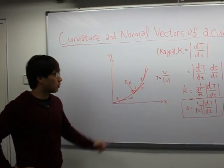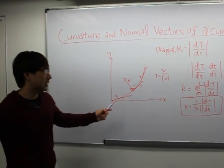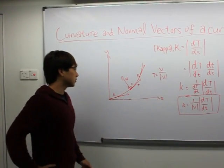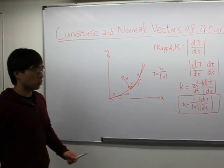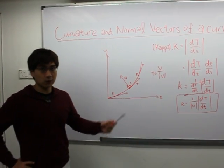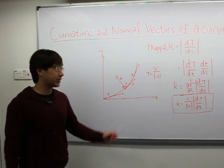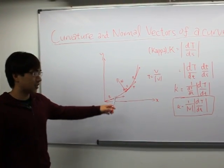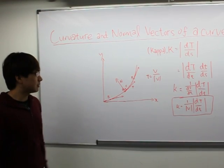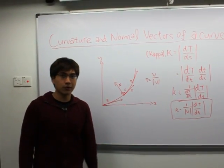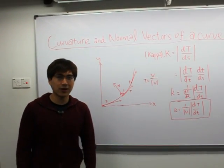The normal is actually 90 degrees to the tangent, and it shows the direction in which the curve curves. In this case it actually points to the left, because the normal always points to the concave part of the curve.